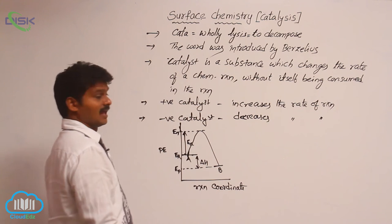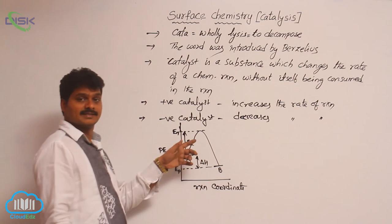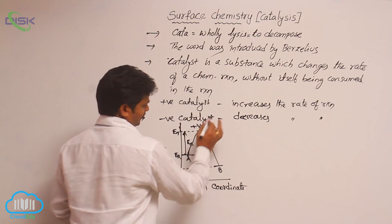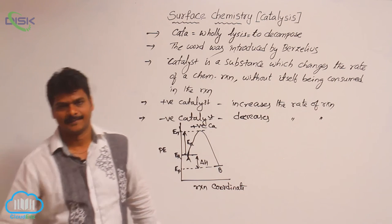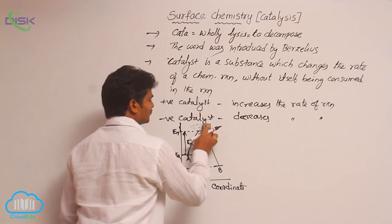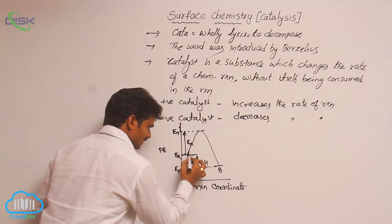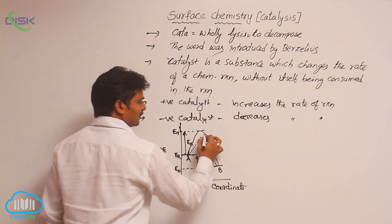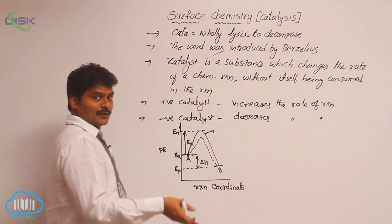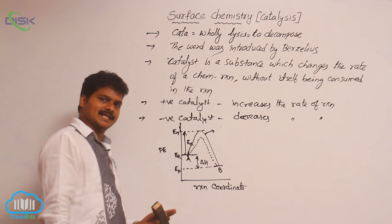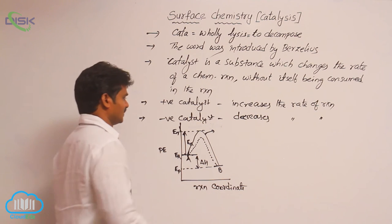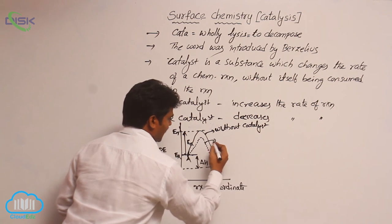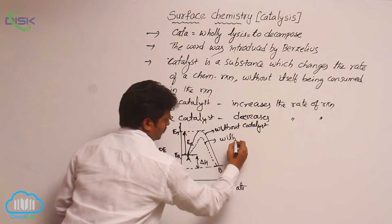Ea means activation energy. Without a catalyst, Ea is the activation energy. The dotted line in the diagram indicates the path of the reaction in the presence of a positive catalyst, while the thick line shows the path without a catalyst.